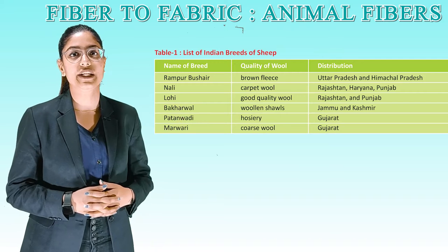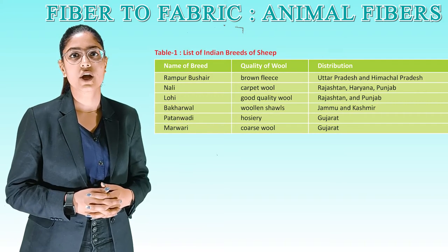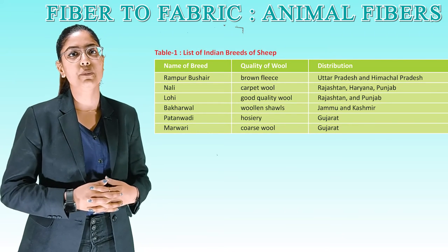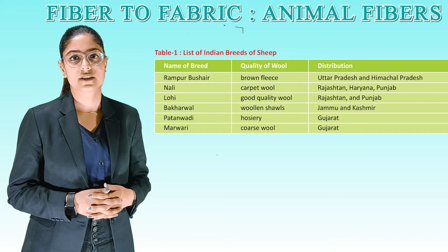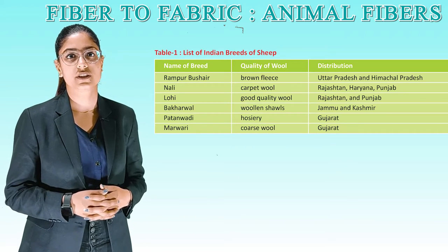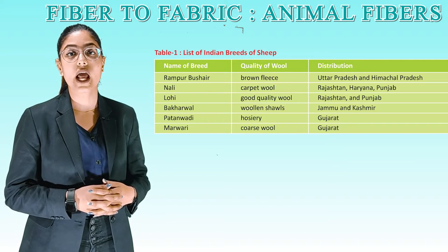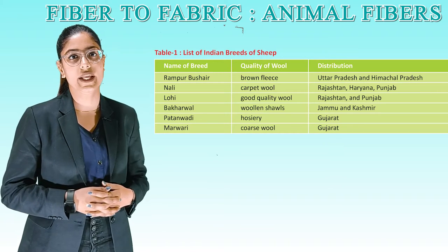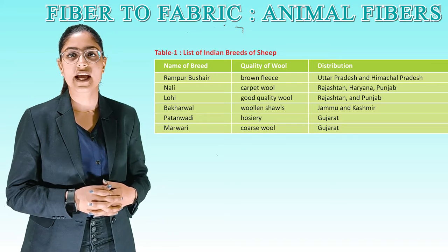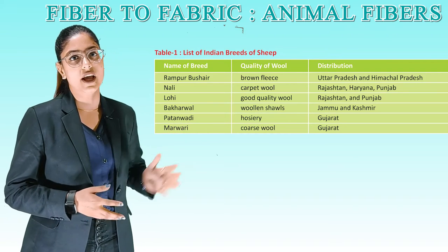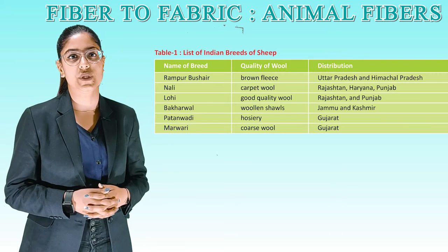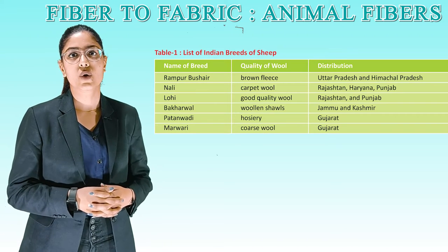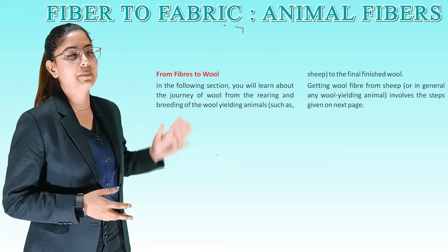See this table — Table 1: List of Indian breeds of sheep, showing name of breed, quality of wool, and distribution. First: Rampur Bhushar — brown fleece — Uttar Pradesh and Himachal Pradesh. Second: Nali — carpet wool — Rajasthan, Haryana and Punjab. Third: Lohi — good quality wool — Rajasthan and Punjab. Fourth: Bhakarwal — woolen shawls — Jammu and Kashmir. Fifth: Patanwadi — Hozri — Gujarat. Sixth: Marwari — coarse wool — Gujarat.